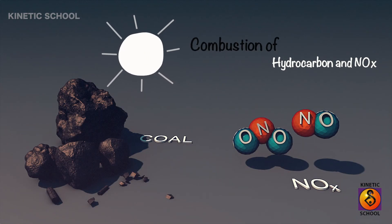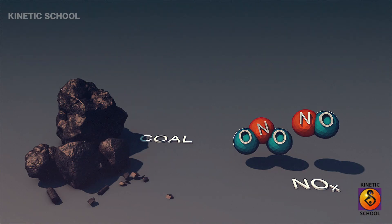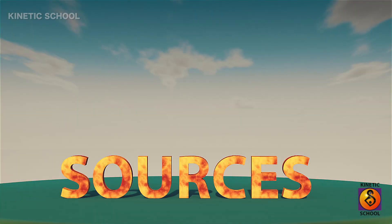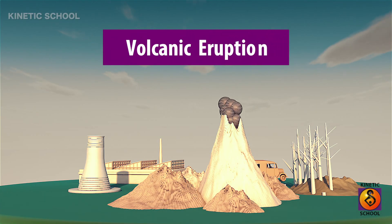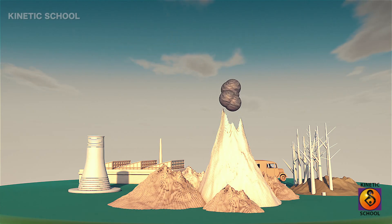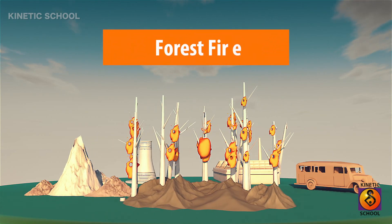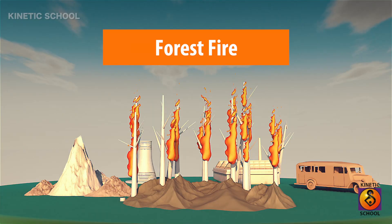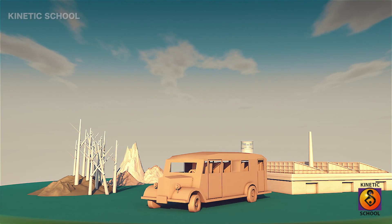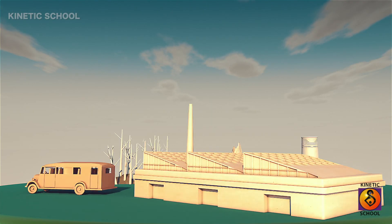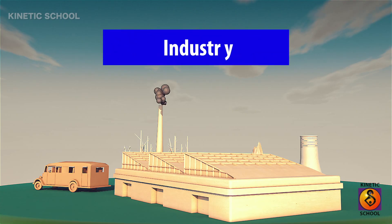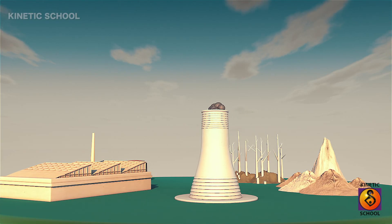Combustion of hydrocarbons and nitrogen oxides are key contributors. Sources of photochemical smog pollutants include volcanic eruptions, forest fires, automobiles, industry, and power plants.